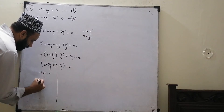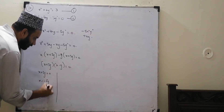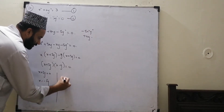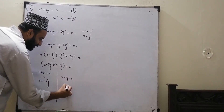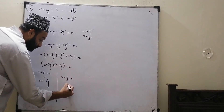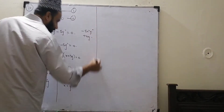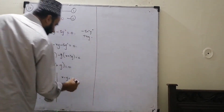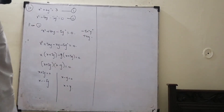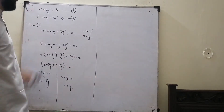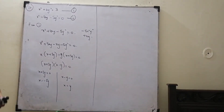From the factorization, one factor gives x is equal to minus five y, and the other factor gives x minus y is equal to zero, so x is equal to y. Now I will use these two combinations in the first equation and find the corresponding answers.